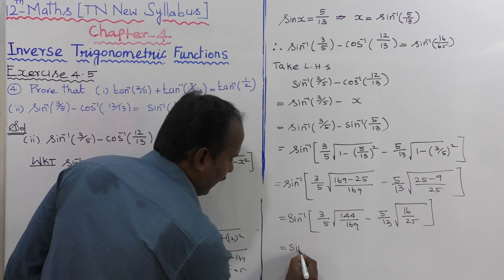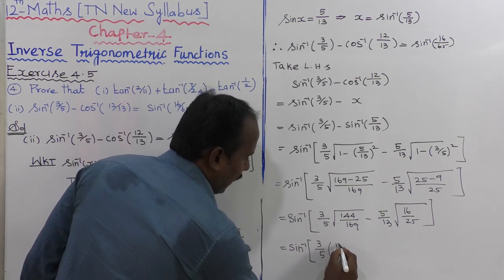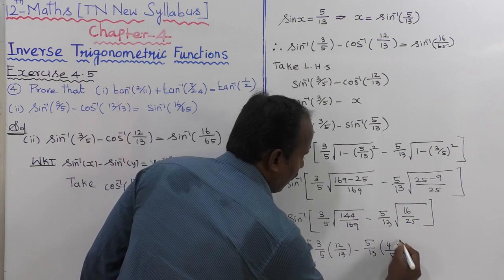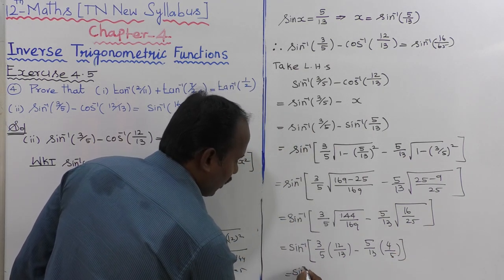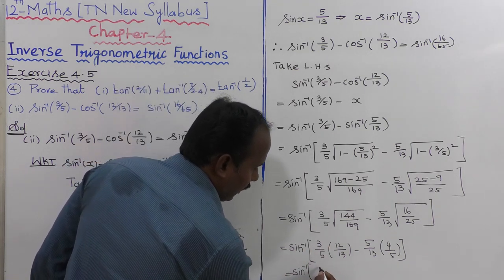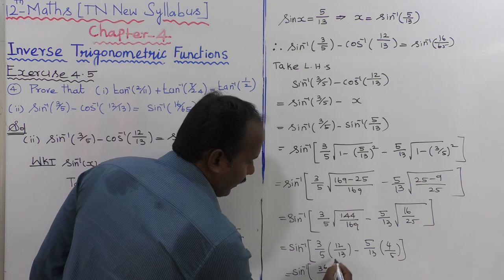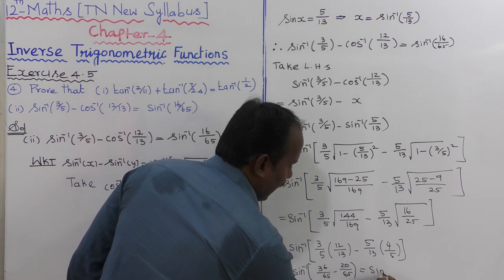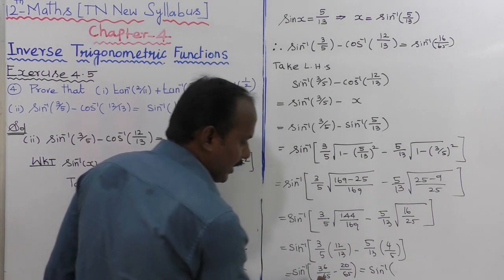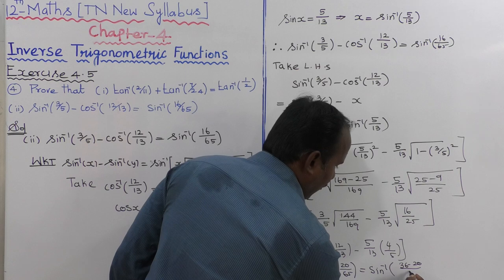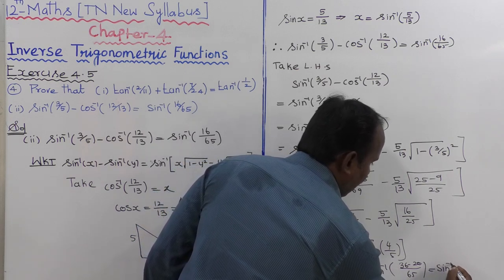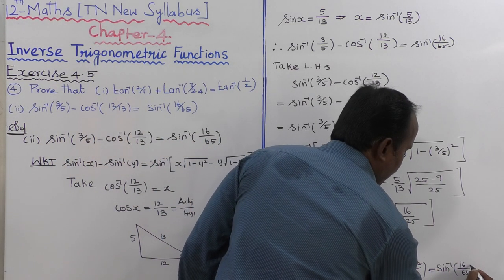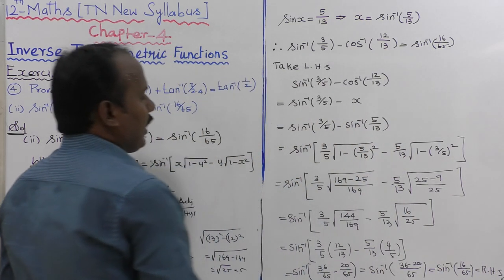That equals sin inverse of 3 by 5 into 12 divided by 13, minus 5 by 13 into 4 by 5. That gives sin inverse of 36 divided by 65 minus 20 divided by 65. Since the denominator is the same, this equals sin inverse of 36 minus 20 whole divided by 65, which equals sin inverse of 16 divided by 65 — equal to RHS. Hence proved.